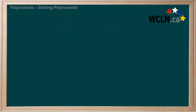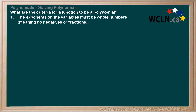We've just seen many examples of polynomials. But how do we know that they're polynomials? In other words, what are the criteria for a function to be a polynomial? It turns out that there are only two criteria. The first is that the exponents on the variables must be whole numbers, meaning no negatives or fractions. For example, is this a polynomial? It may look like one, but it is not. Since 2 divided by x is the same as 2 times x to the minus 1, it's not a polynomial. So we can conclude that a polynomial cannot have division by a variable.